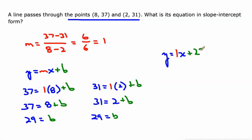plus 29. But remember, 1 times x is just x. So let's just write our equation as y equals x plus 29.